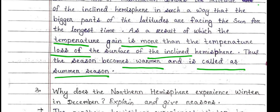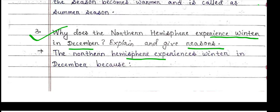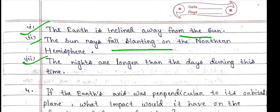Question number 3: Why does the Northern Hemisphere experience winter in December? The Northern Hemisphere experiences winter in December because: first, the Earth is inclined away from the Sun; second, the Sun rays fall slanting on the Northern Hemisphere; third, the nights are longer than the days during this time.